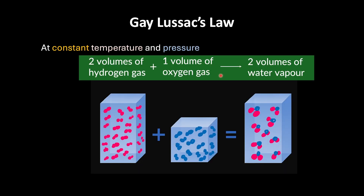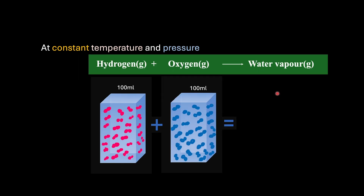Here is an example. We know experimentally that two volumes of hydrogen should combine with one volume of oxygen gas to produce two volumes of water vapour. So if we had 100 ml of hydrogen combining with 50 ml of oxygen gas, we were getting 100 ml of water vapour. Now, my question to you is: what if I mix 100 ml of hydrogen with 100 ml of oxygen? How much water vapour do you think will be produced — 100 ml? 200 ml?